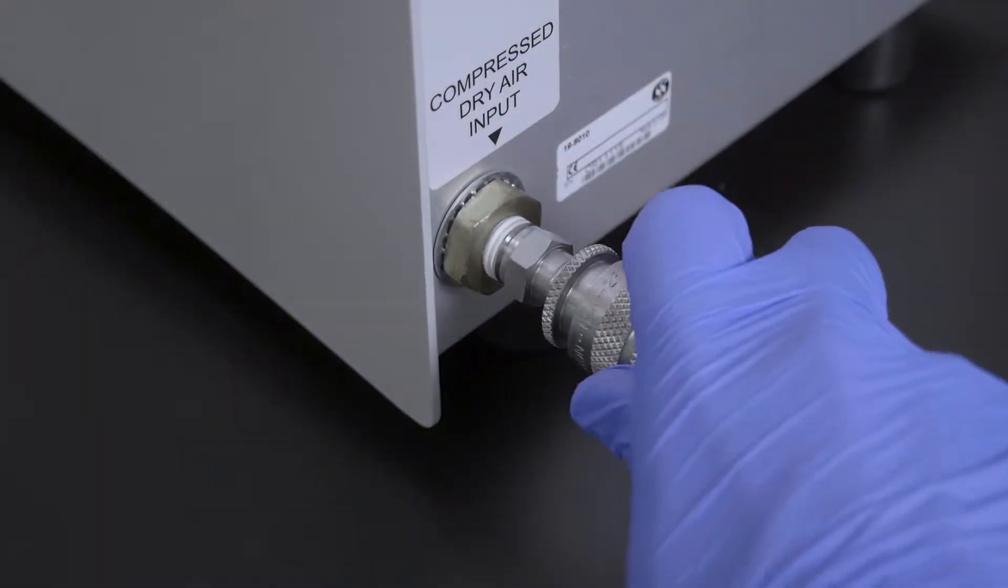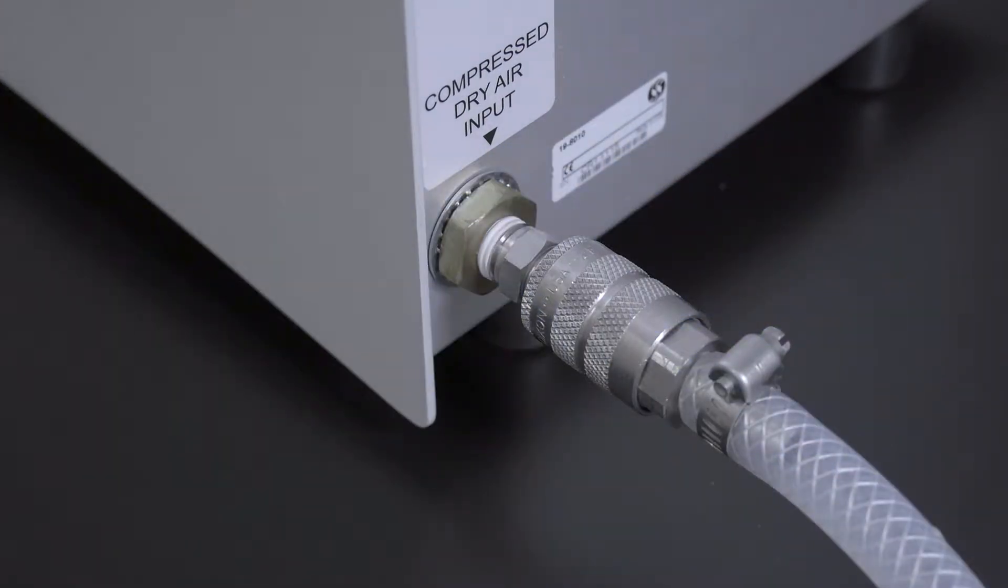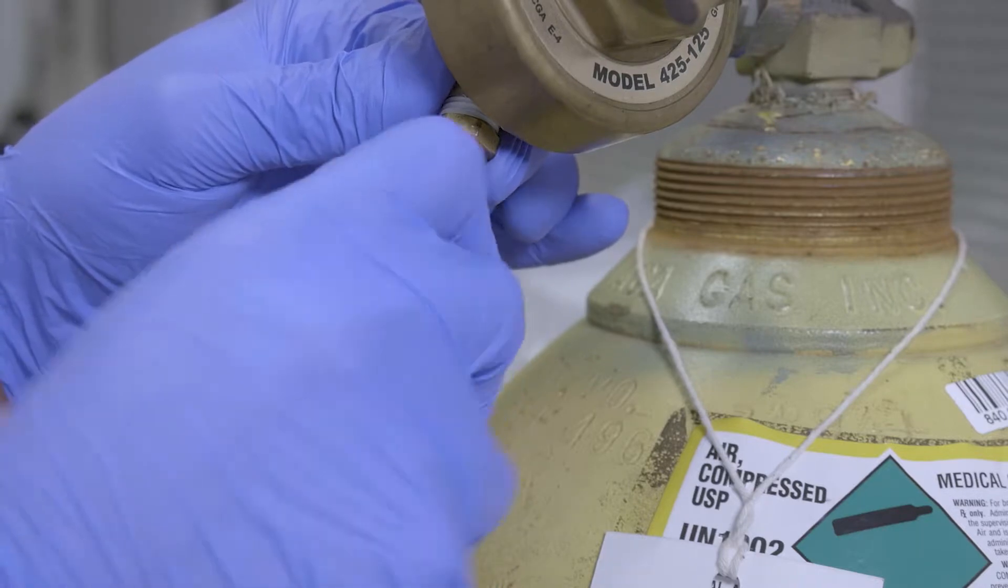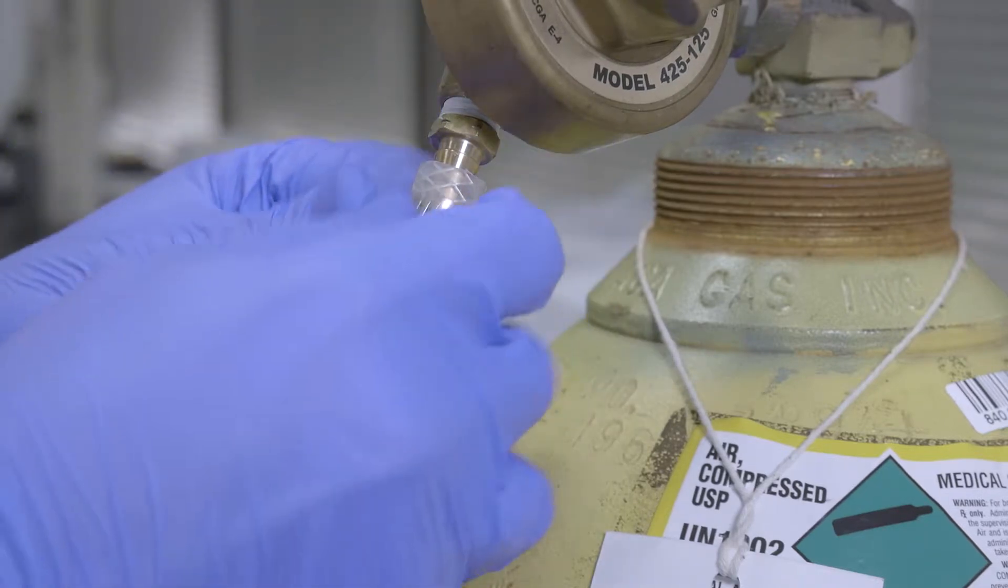Connect one end of the compressed air hose to the BeR Cryo unit. Connect the other end of the hose to your air supply. An additional fitting may be required.